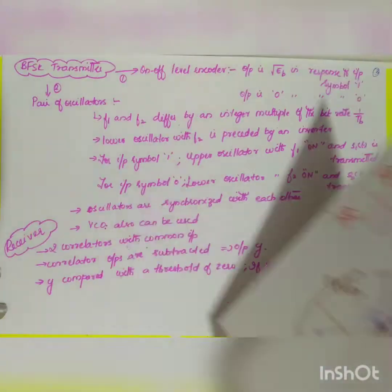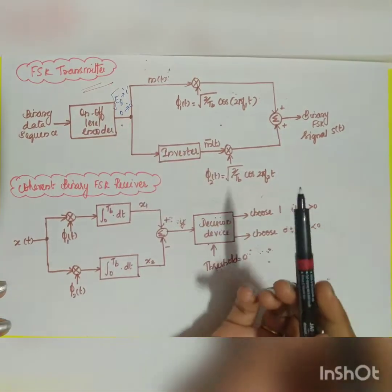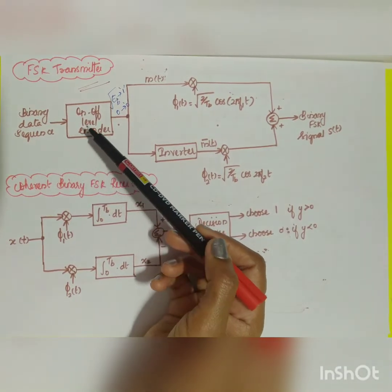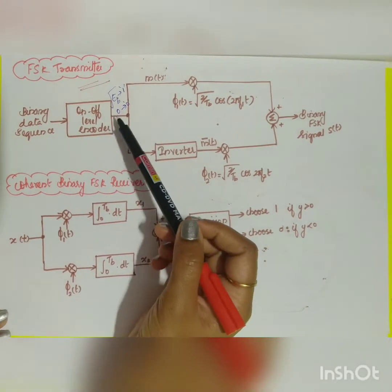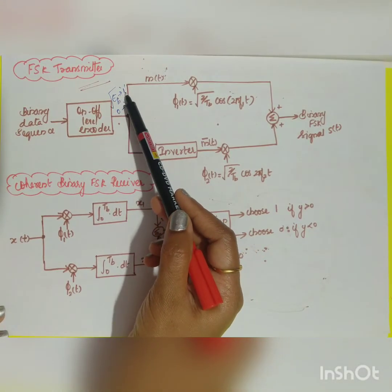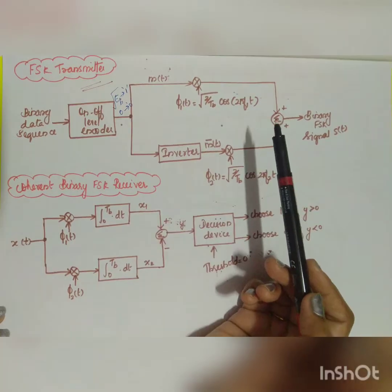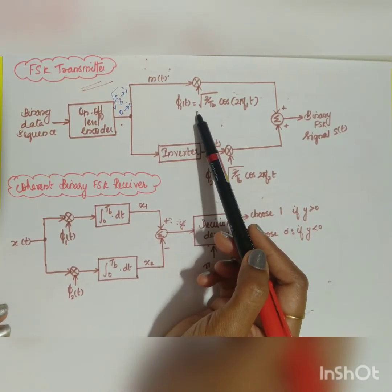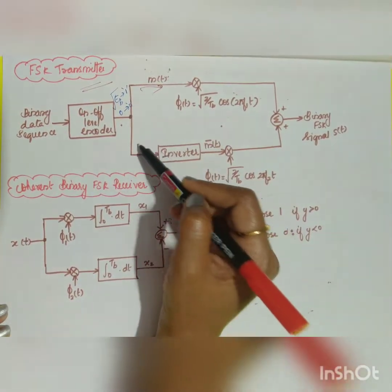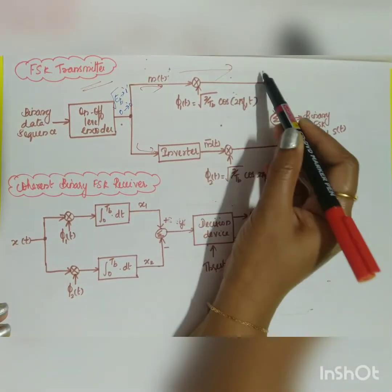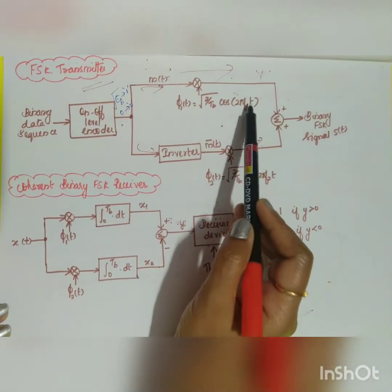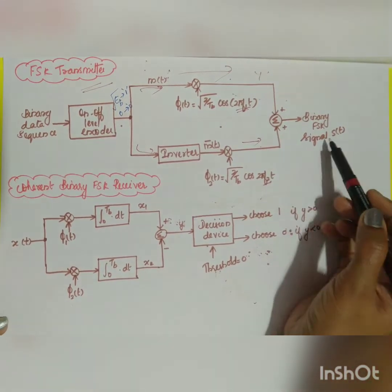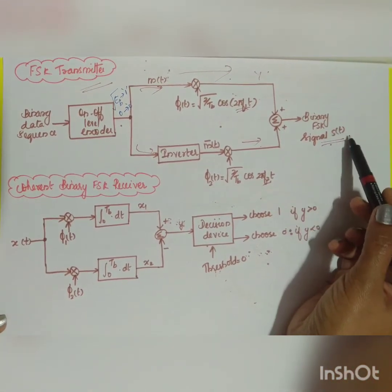Moving to the transmitter block diagram: a binary data sequence is fed into an on-off level encoder. The encoder output is √E_b for symbol 1 and 0 for symbol 0. This output is given to a multiplier where the signal is multiplied by the orthonormal basis functions — one path uses frequency f_1 (for symbol 1) and the other uses f_2 with an inverted signal (for symbol 0). The sum of both paths produces the transmitted modulated signal s(t).